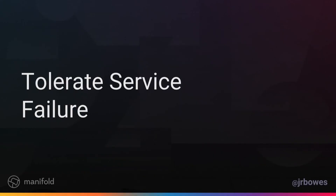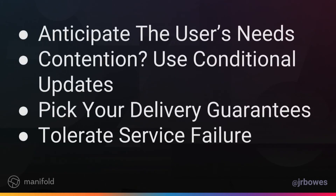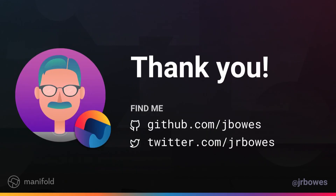The idea here is to try and tolerate service failure — think about the dependencies of one service and how you can ensure that if they're not accessible, you can still return a result where it makes sense. So just to recap: you want to anticipate the user's needs; if you've got contentious resources, consider using conditional updates; pick your delivery guarantees; and tolerate service failure. That's all — thank you.